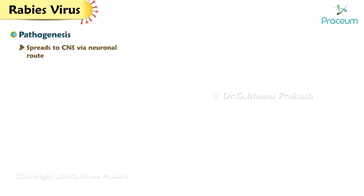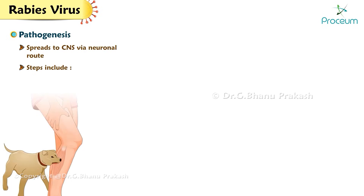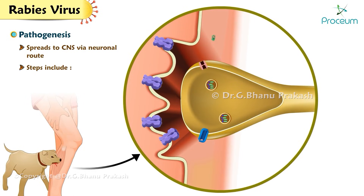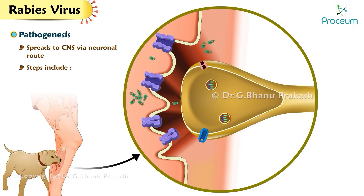Pathogenesis: The rabies virus spreads to the central nervous system via the neuronal route. The virus is inoculated from an infected animal bite, then binds to nicotinic acetylcholine receptors at the neuromuscular junction and enters the muscle cell. However, rabies prefers neurons over muscle cells.